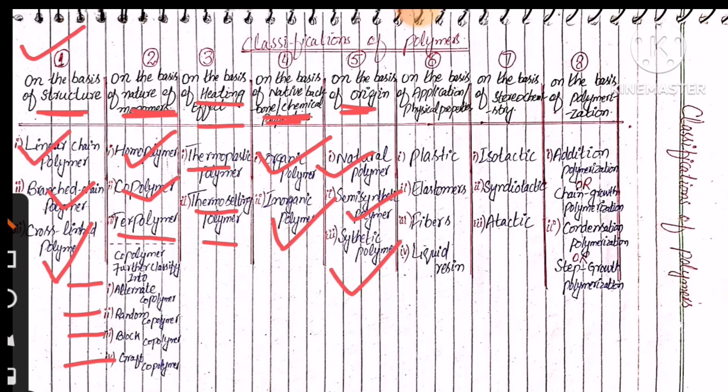On the basis of applications or physical properties, polymers can be further subclassified into plastics, elastomers, fibers, and liquid resins. On the basis of stereochemistry, polymers can be subclassified into three main types.